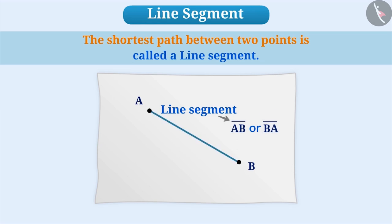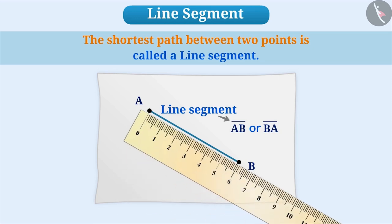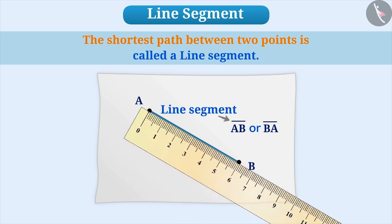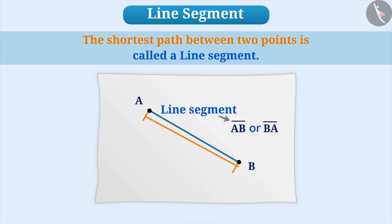Since we can measure the distance between the two endpoints of a line segment, we can say that the length of the line segment is fixed. Can you tell in which cases you can see line segments? Take your time and think about it.